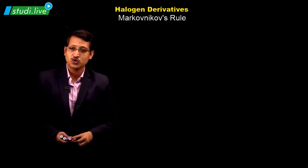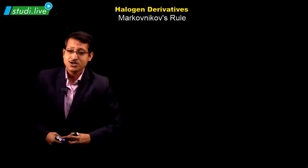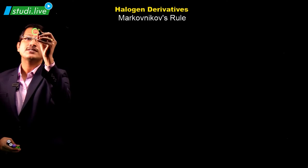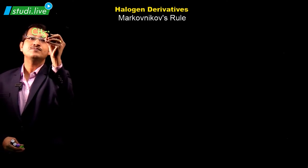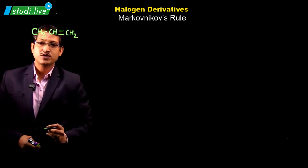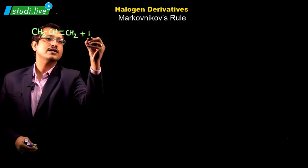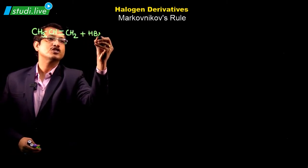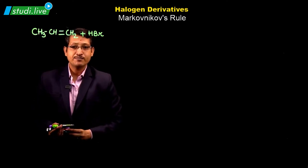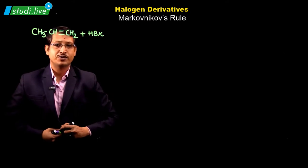What basically is Markovnikov's rule and how does it decide the major product of the reaction? The reaction we need to figure out once again is CH3CH double bond CH2 — that is propene — reacting with HBr. So when propene reacts with HBr, there are two possibilities of the product.